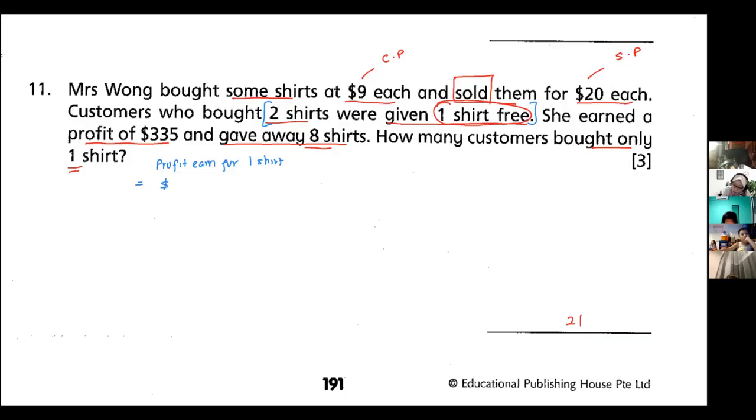So $20 minus $9. Where do I get this from? The first sentence. So her profit is actually $11.